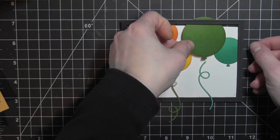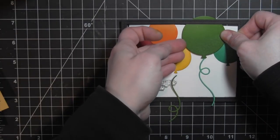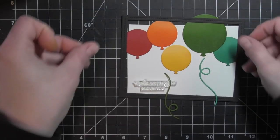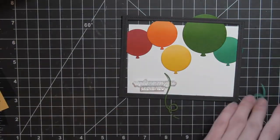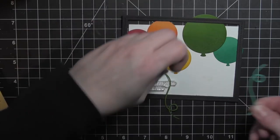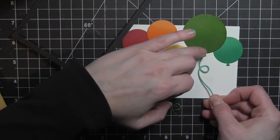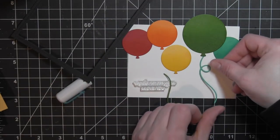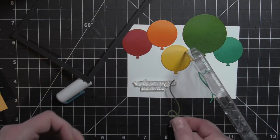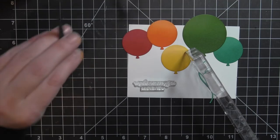Before I add the balloon strings, I want to figure out just exactly where I want my greeting to go. I'm using a combination of greetings from the Mom Plus Me stamp set and the Just For You stamp set. I've laid them out where I want them to go. I'm going to attach a couple of balloon strings. I was anxious to see how the balloons would look with the balloon strings. I'm using the Zig Glue Pen to attach those and then just holding them down with an acrylic block until the glue dries.